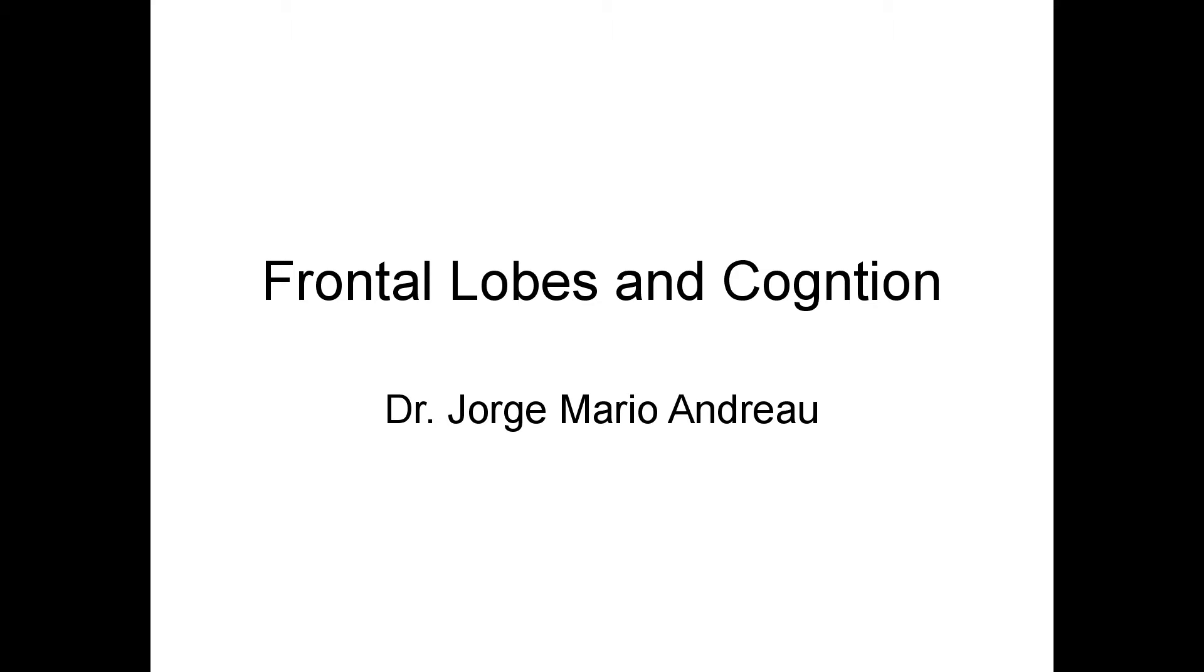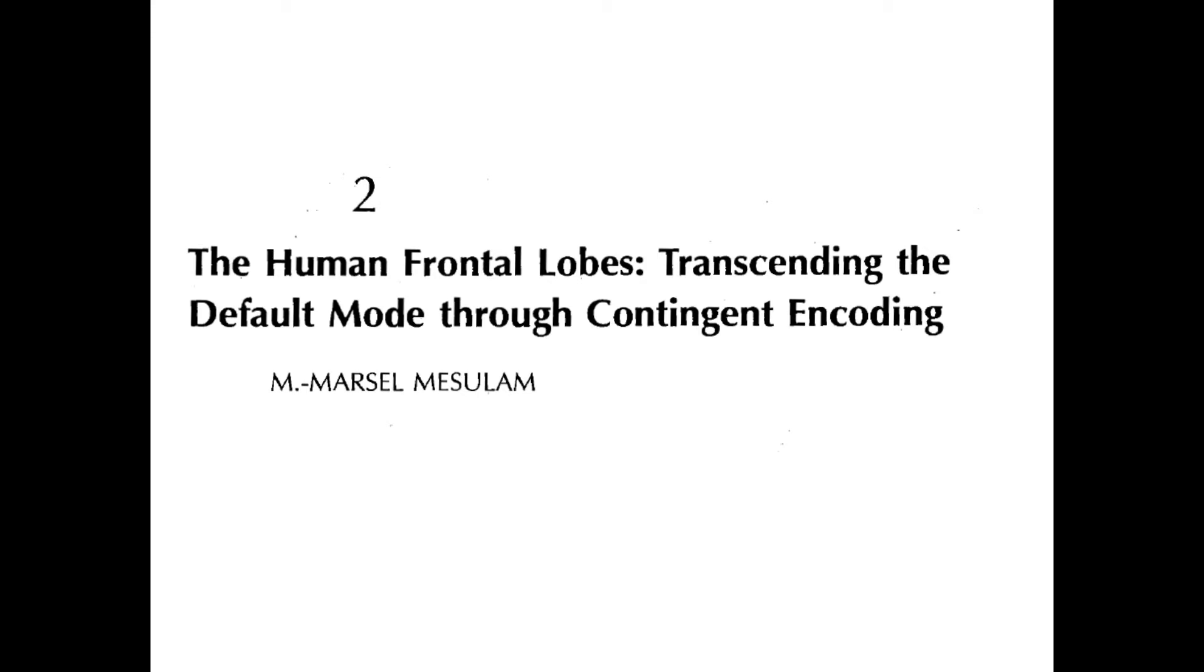So, for this class we're going to use two texts. The first one is called The Human Frontal Lobes, Transcending the Default Mode Through Contingent Encoding. I would like you to read carefully this chapter because it's really interesting.